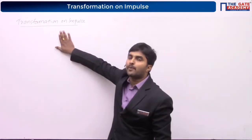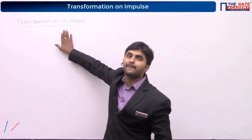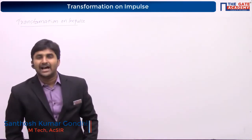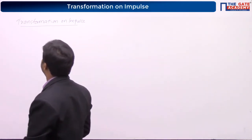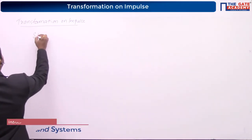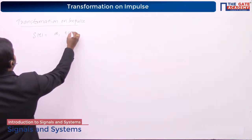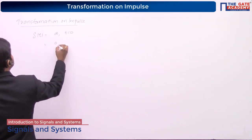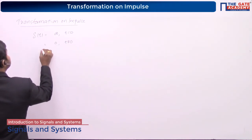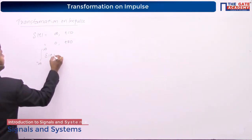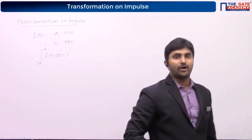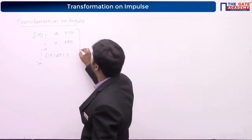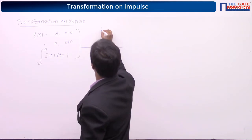Now let us move into the next topic which is Transformation on Impulse. We have learnt about an impulse. When we discuss about a continuous time impulse, del(t) is infinity for t equal to 0 and equal to 0 for t not equal to 0. We have also seen that the integral from minus infinity to infinity of del(t) dt is equal to 1. This is what we call as a unit impulse signal.